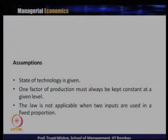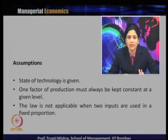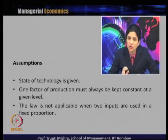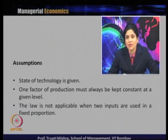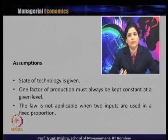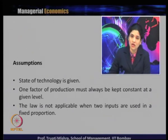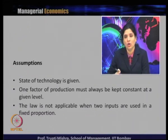There are a few assumptions. The state of technology is given. One factor of production must always be kept constant at a given level — K has to be constant, and only labor changes. The law is not applicable when two inputs are used in fixed proportion. If you maintain the second assumption that one factor must remain constant, then the third assumption follows automatically. In the short run, one input must be fixed; otherwise the law will not be valid.